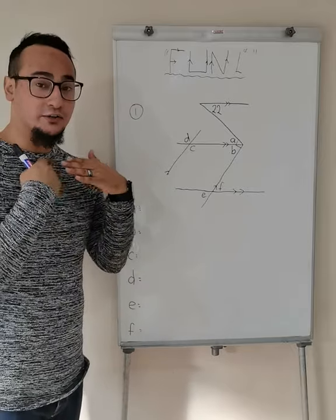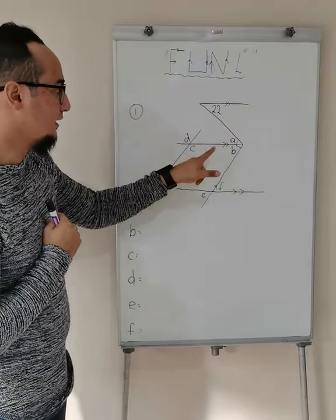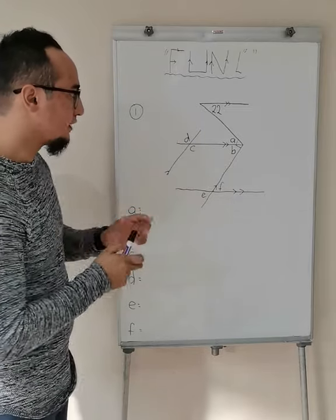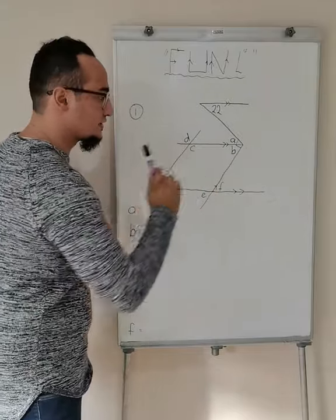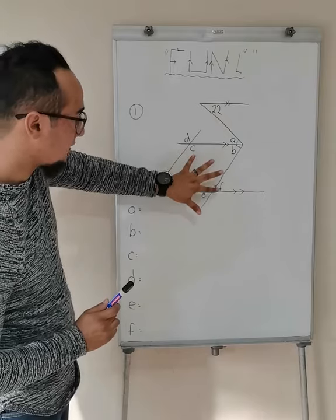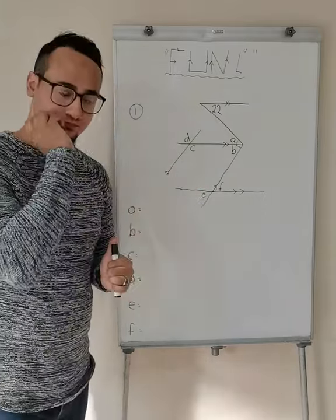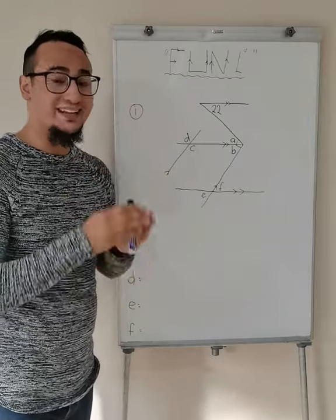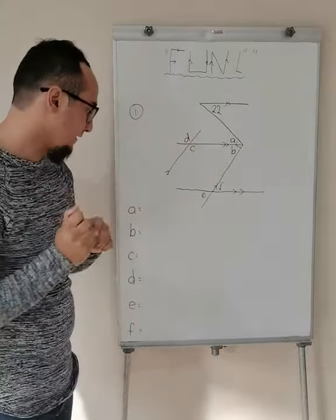So remember we are going to do this in alphabetical order. There's A, B, C, D, E and F. Notice the lines going across my horizontal lines — they are parallel, those two and the third one over there. And the ones going up, those are also parallel. Notice when they are parallel, you're going to use your fun angles.